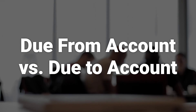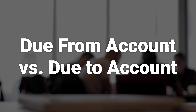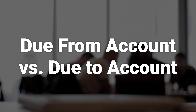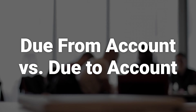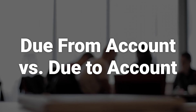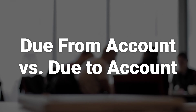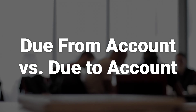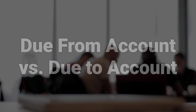While the due from account tracks money owed to the company, the due to account is used to track obligations that are owed to another entity. The focus of due from accounts is on incoming assets, also known as receivables, while the focus of due to accounts is on outgoing assets, also called payables. Both accounts should never have a negative balance and can be zero at any given time.